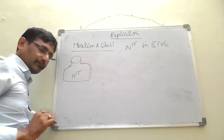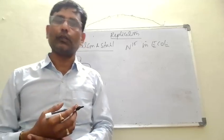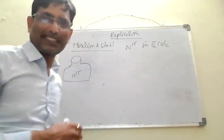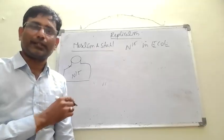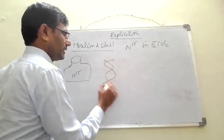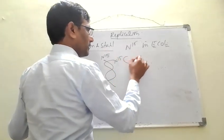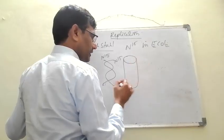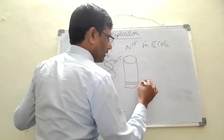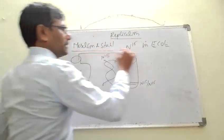N15 isotope is incorporated into the newly synthesized DNA. They extracted DNA from this culture medium — the DNA contained the heavy N15 isotope. This DNA is separated by density gradient centrifugation, and the bands formed at the bottom of this test tube.